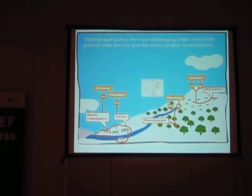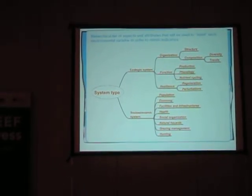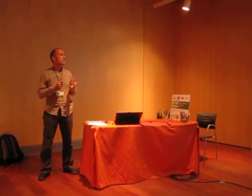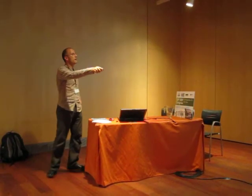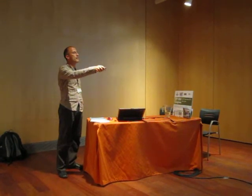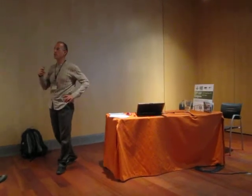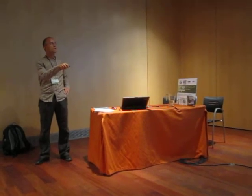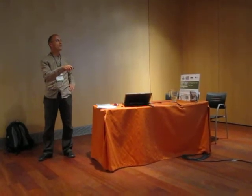Following this reasoning, we have created a hierarchical list of aspects and attributes that relate the functioning of the system with the components of our complex system. For example, in the ecological system we have created labels called organization, function, and resilience. All the variables gathered from the monitoring programs are labeled with one of these aspects and attributes. We do exactly the same with monitoring protocols from the socio-economical system.